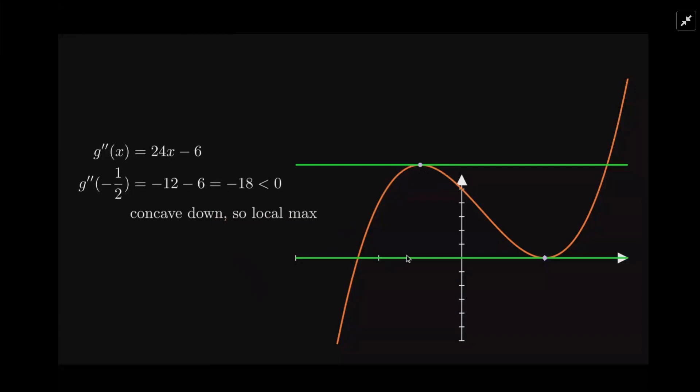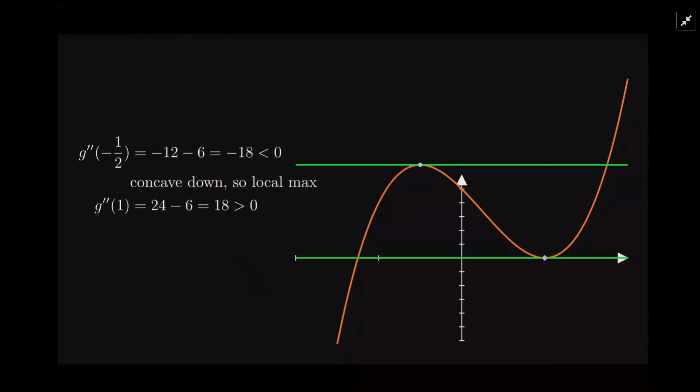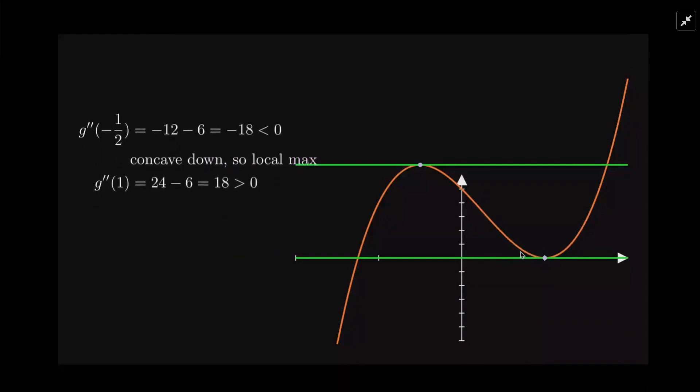Okay, so when x is negative one-half, we have a local maximum. Now we put in positive one into the second derivative. Do that same test. And we get 18, which is greater than zero, which means it's concave up. Concave up. If it's concave up, then the extreme is a local minimum.